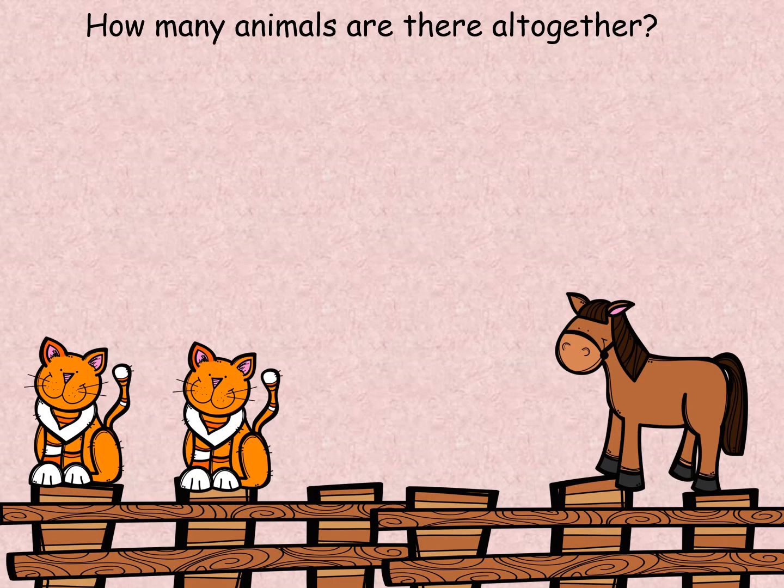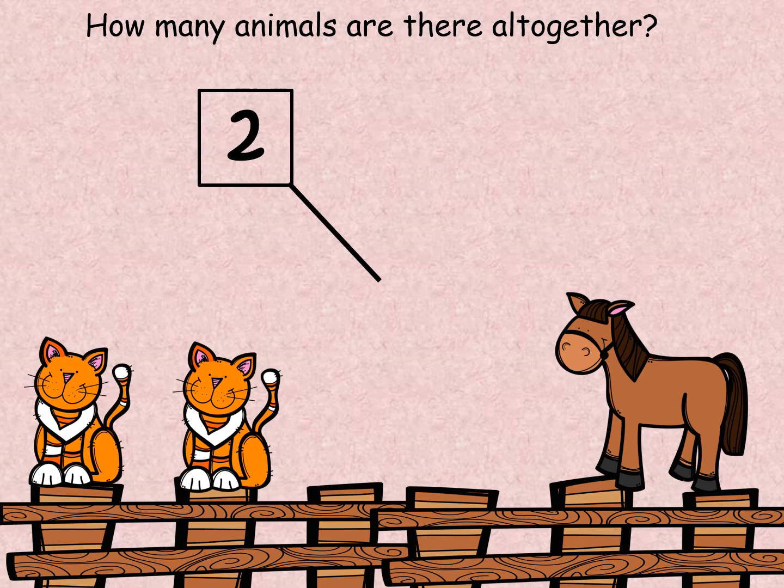How many animals are there all together? How many cats do we have? That should be the first thing we count. We've got one, two cats. How many horses do we have? You're right, we only have one horse.